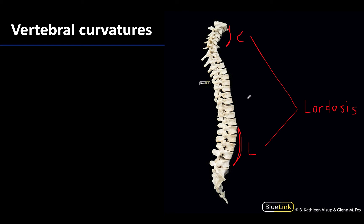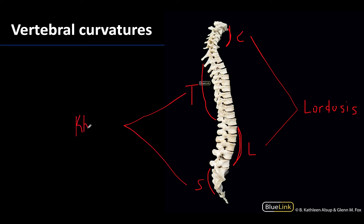Whereas with the thoracic and the sacral regions, we are going to be more kyphotic in terms of the curvature. So the thoracic and sacral regions are going to be kyphotic. Oftentimes you hear the term kyphosis or kyphotic associated with a pathological condition.